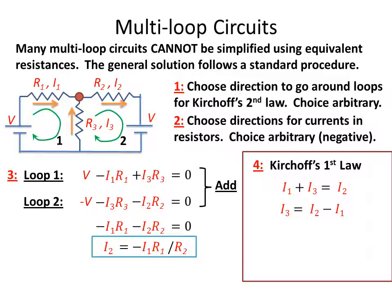Solving for I3, we have I3 is equal to I2 minus I1. We plug in for I2 what we just found over here on the left, and then we solve for I3 in terms of I1. So now we have I2 and I3 in terms of I1.